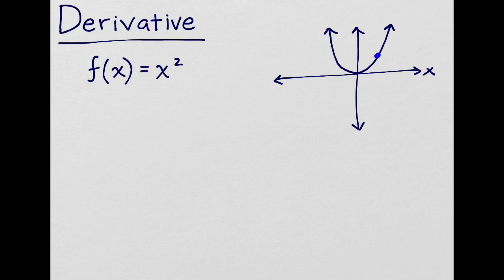Graphically, the derivative represents the slope of a tangent line at any point on the curve. Put simply, it tells us how steep the curve is at a particular point. But how do we calculate it?